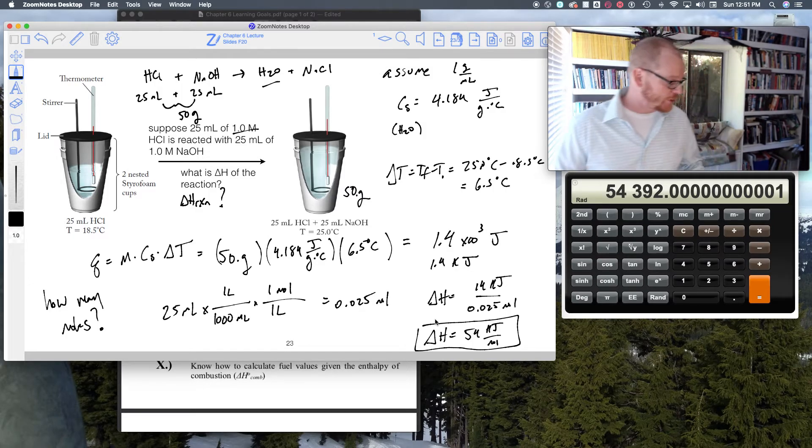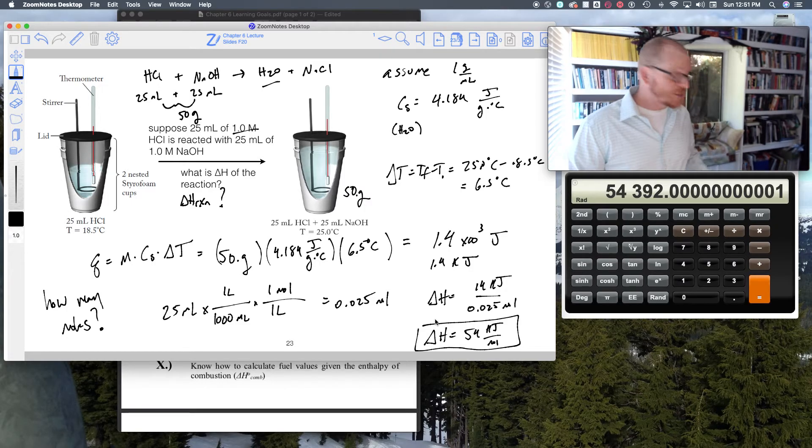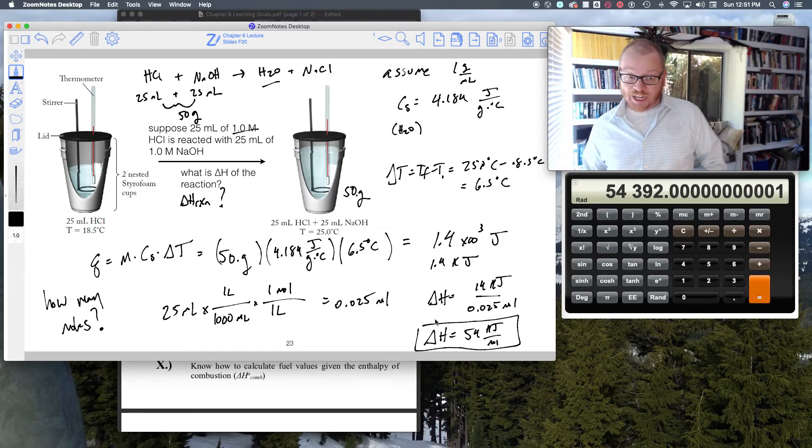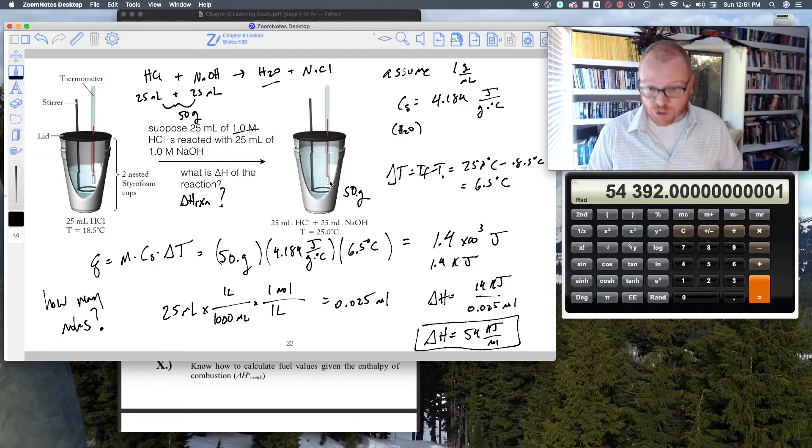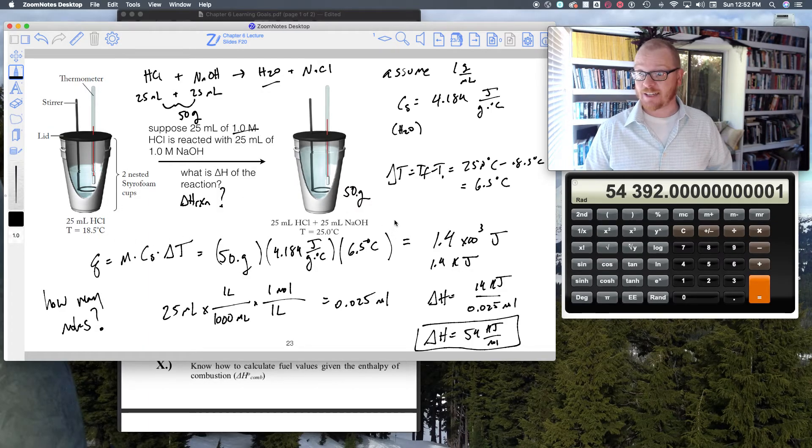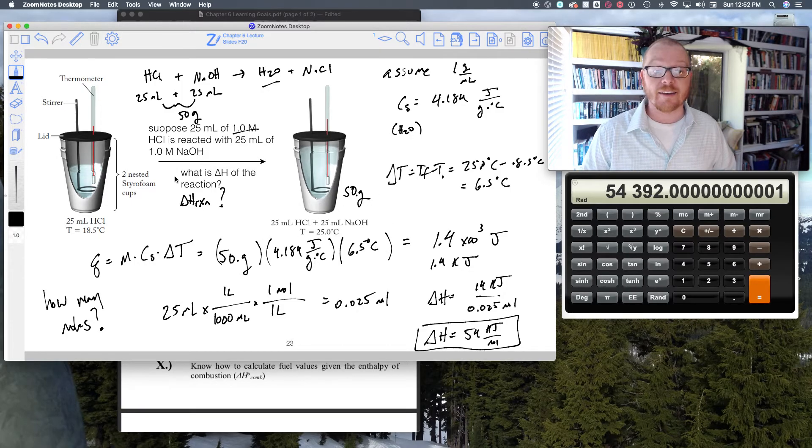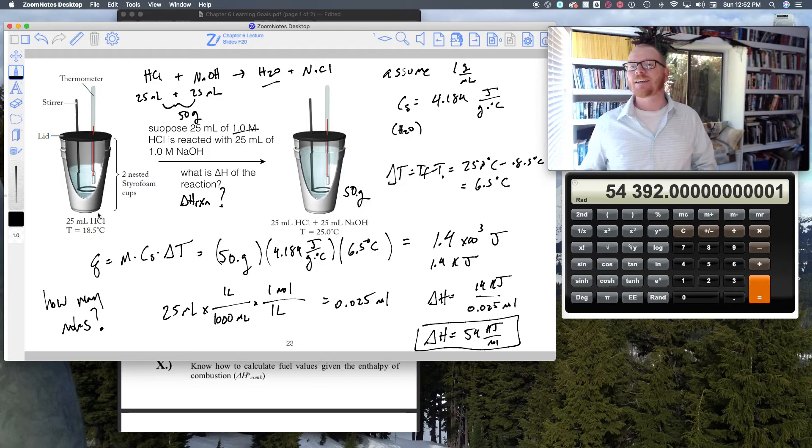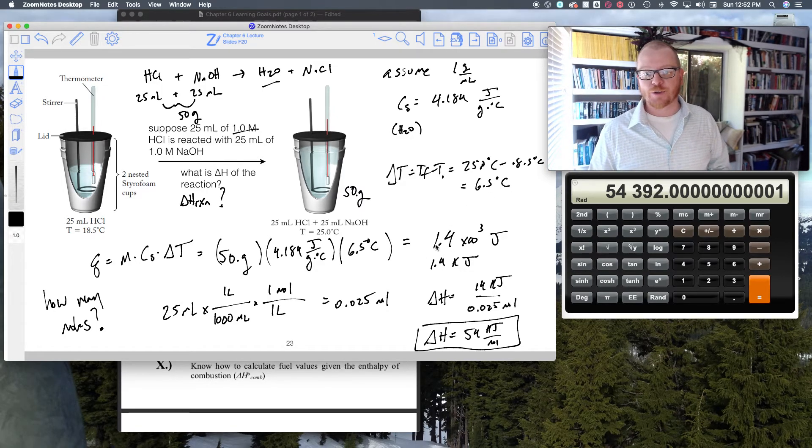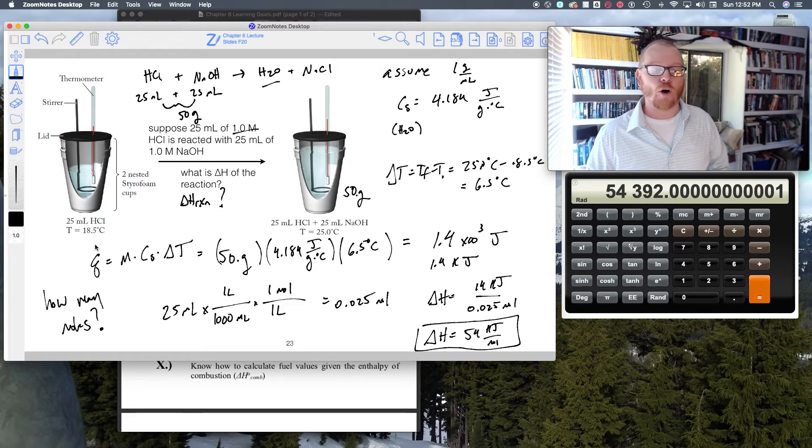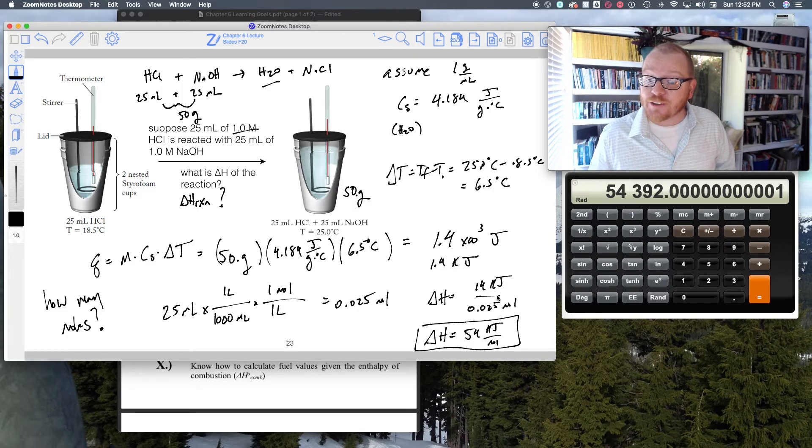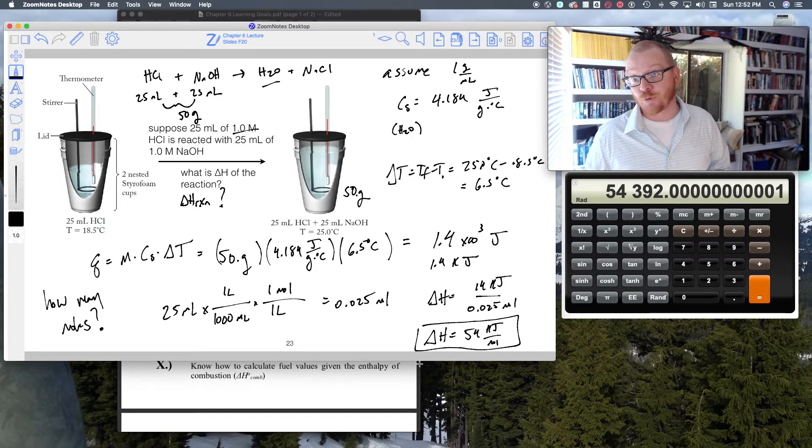There's a couple of things going on in these calorimetry experiments. Just to summarize, we can see if a reaction is exothermic or endothermic based on if there's a temperature rise. We can calculate how much heat evolved in the reaction. And when I divide my total heat evolved by the number of moles that reacted, that gives me my delta H of reaction.